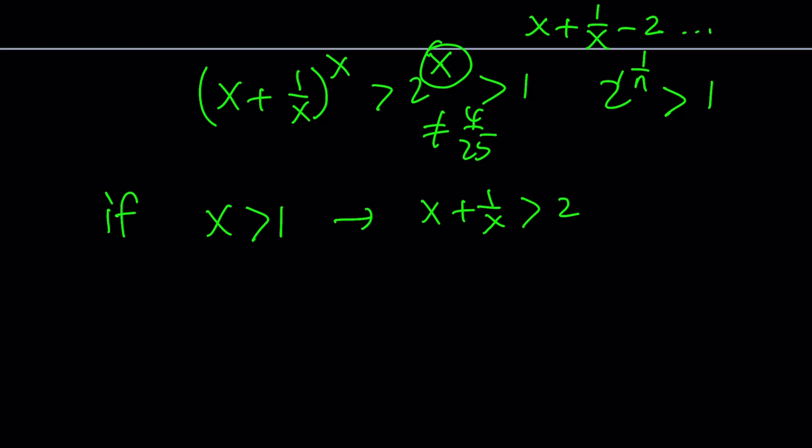Can x be 0? No, because we have 1 over x, that's going to make it undefined. Therefore, x needs to be negative. Awesome.